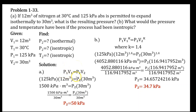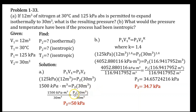We have P1V1 equals P2V2. Plugging in the values: 125 kilopascal multiplied by 12 cubic meters equals P2 multiplied by 30 cubic meters. Dividing both sides by 30 cubic meters, we get our final pressure in the isothermal process, which is 50 kilopascal.